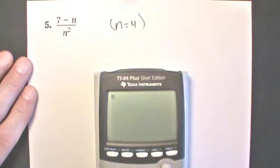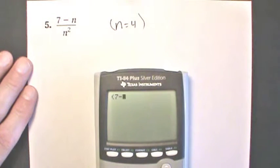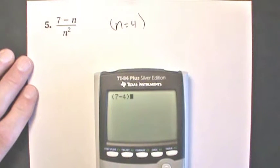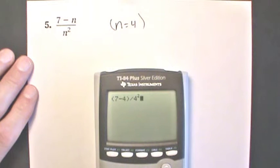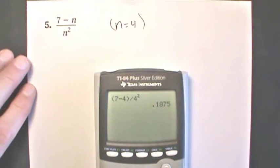We're going to start by putting parentheses around 7 minus 4, because we need that to occur before the division of 4 squared. So (7 minus 4) divided by 4 squared equals 0.1875.